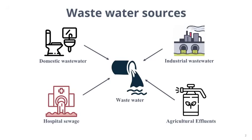Agricultural wastewater includes animal waste, fertilizers, and pesticides. Animal waste has a strong organic content — much stronger than human sewage — and contains nutrients such as nitrogen and phosphorus. Pesticides include herbicides, insecticides, and fungicides.